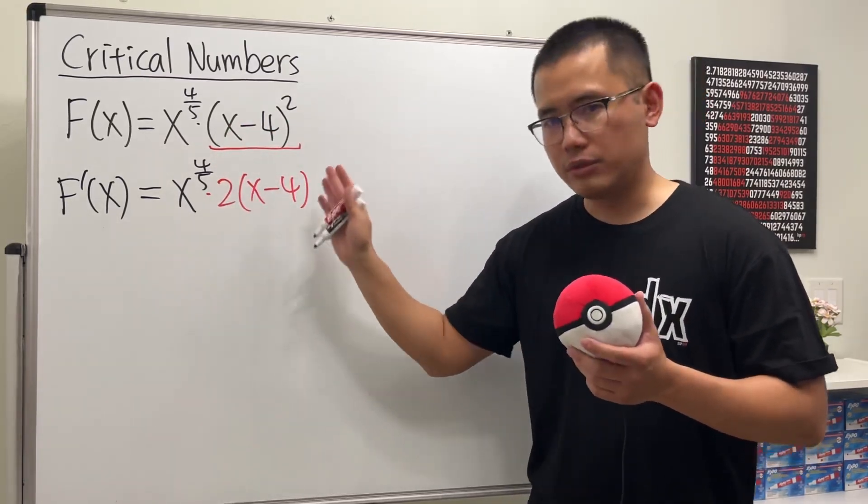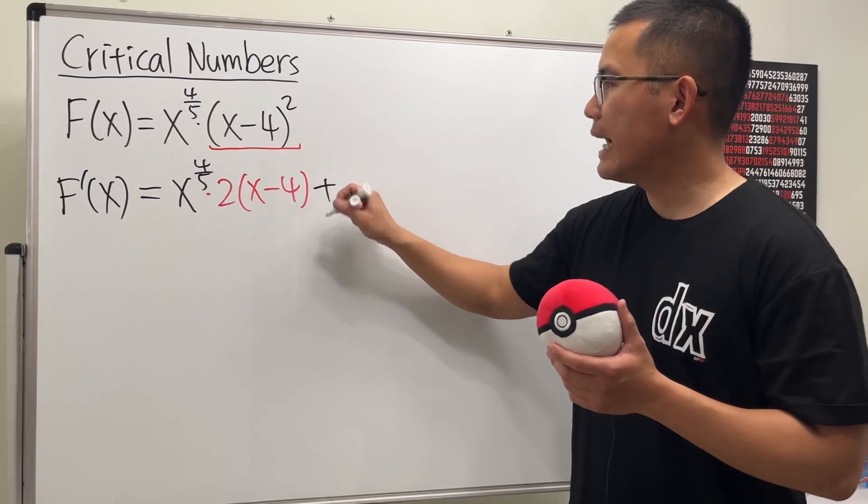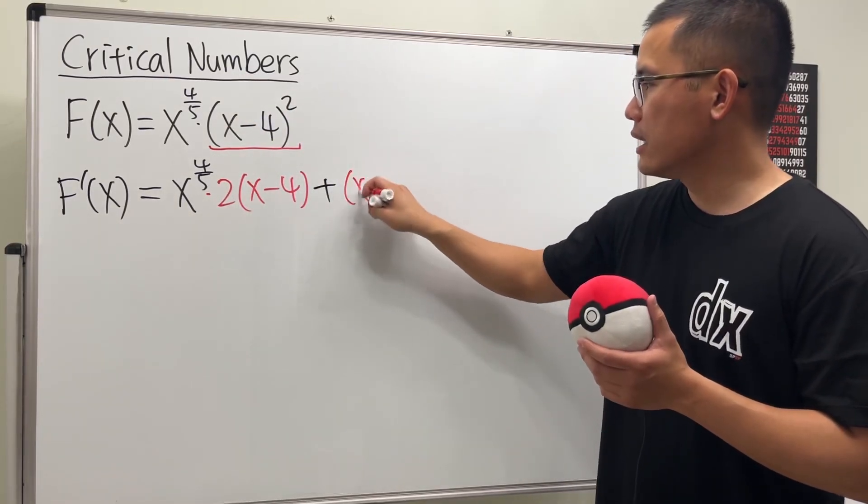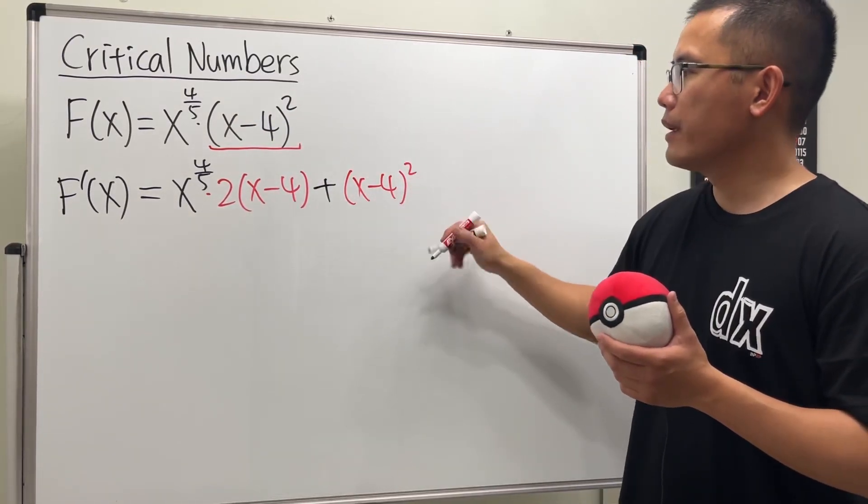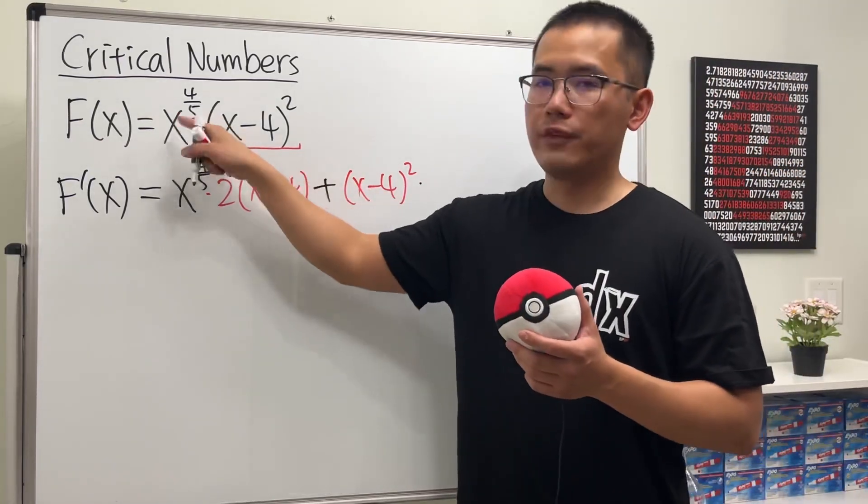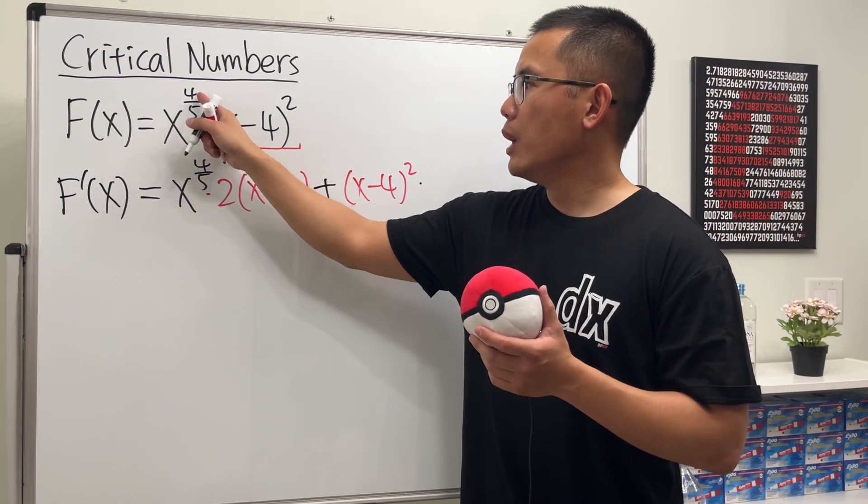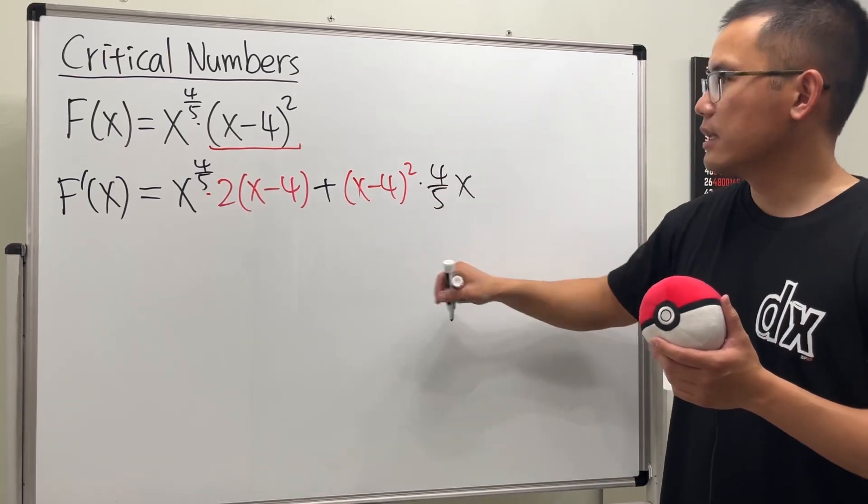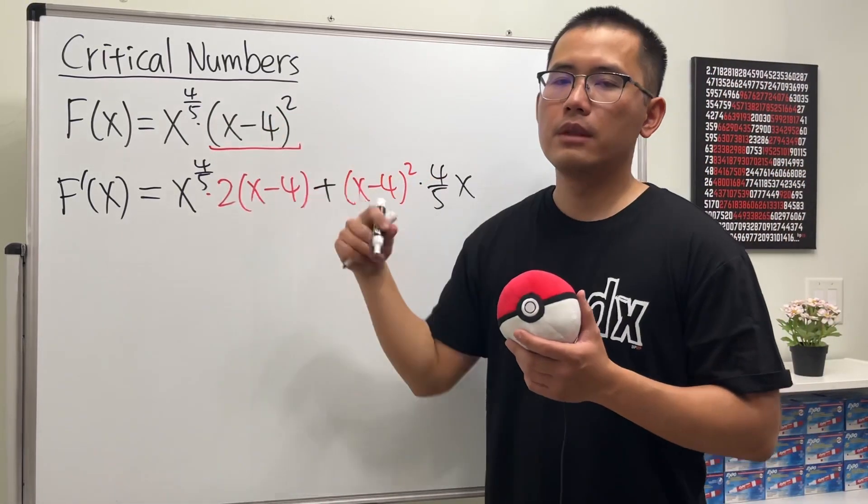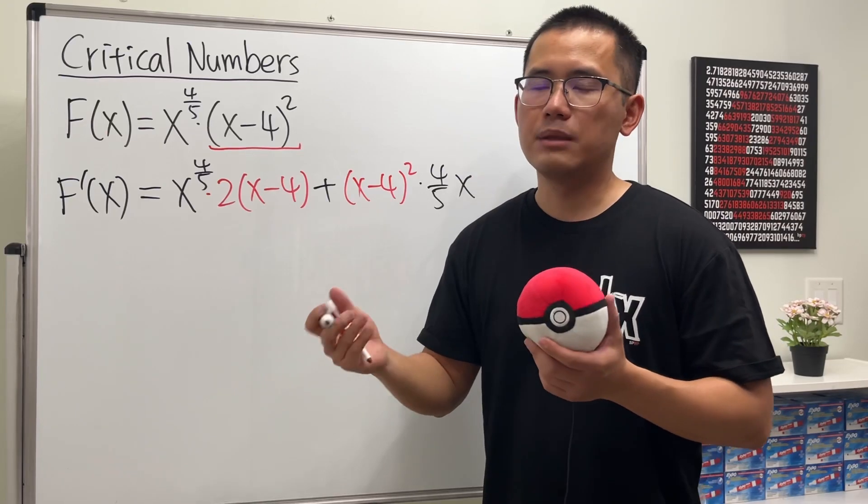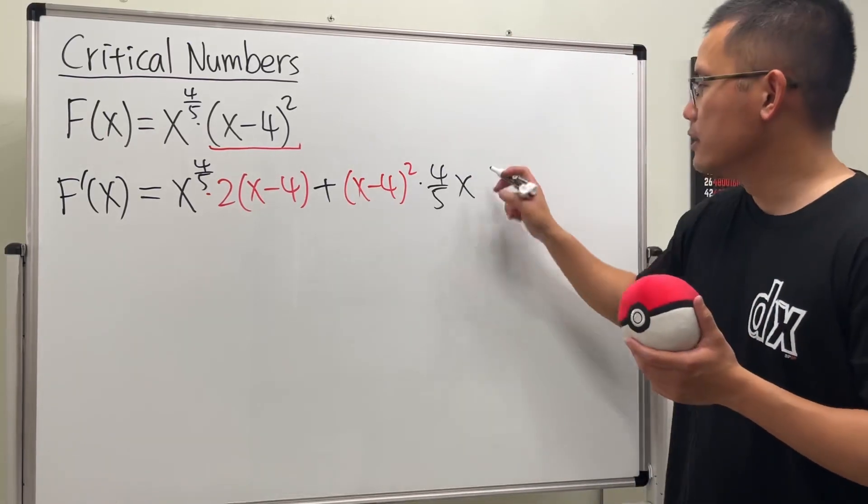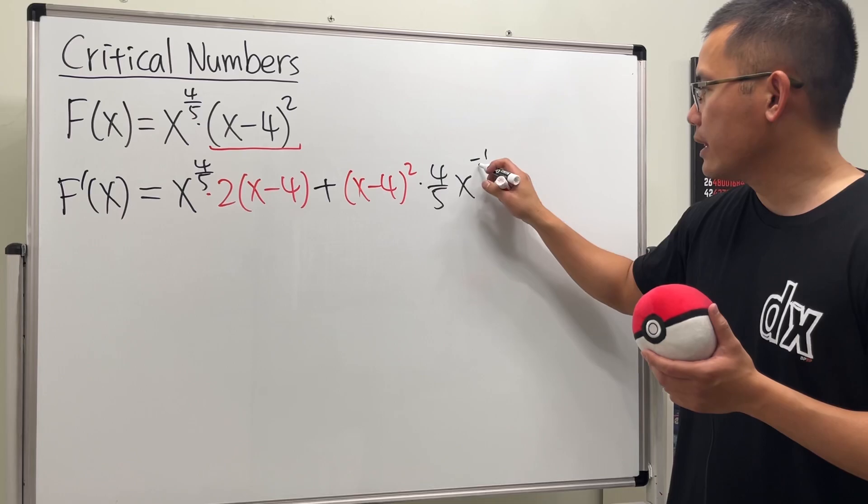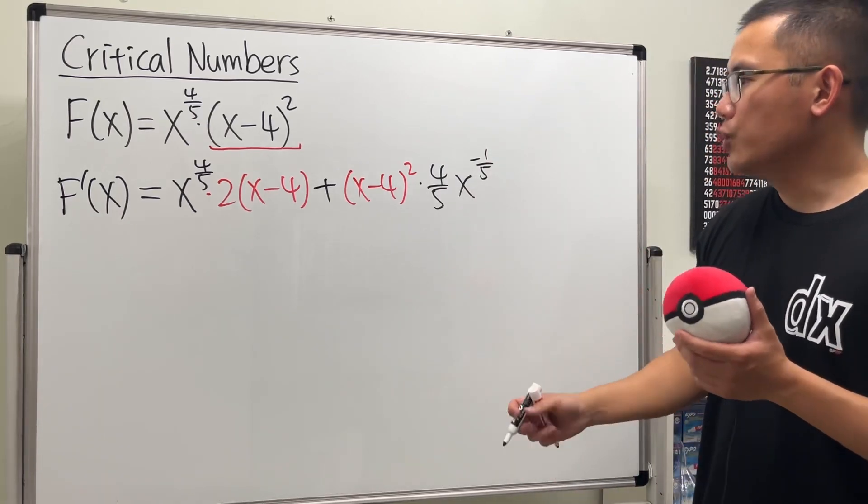Multiply by 1 doesn't matter, so this is okay. Then we add the second function, which is (x - 4)^2, and we multiply by the derivative of the first. Use the power rule, bring the 4/5 to the front, and then we have x, and then we subtract 1: 4/5 minus 1 is the same as 4/5 minus 5/5, so we get -1/5.